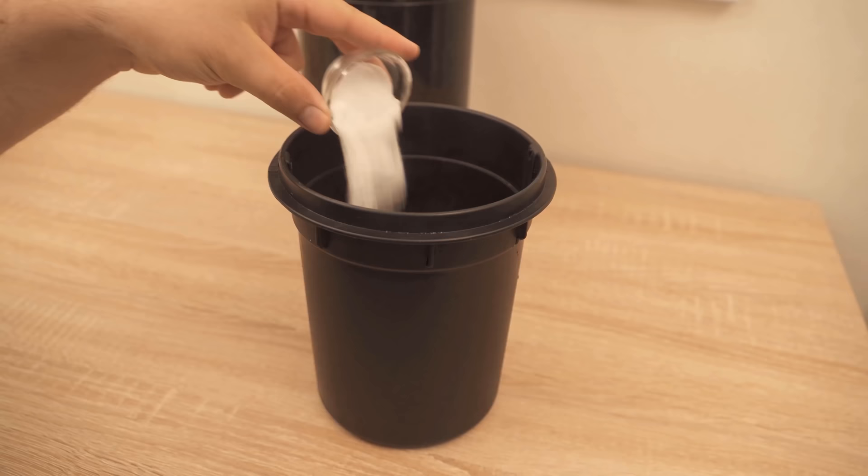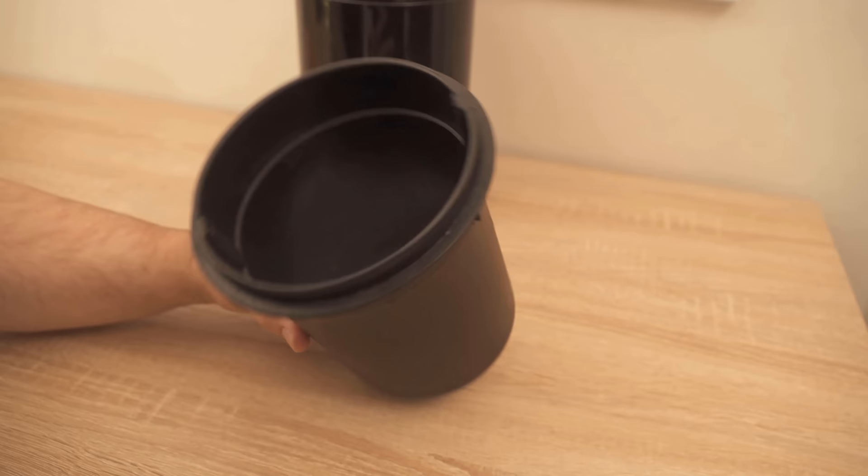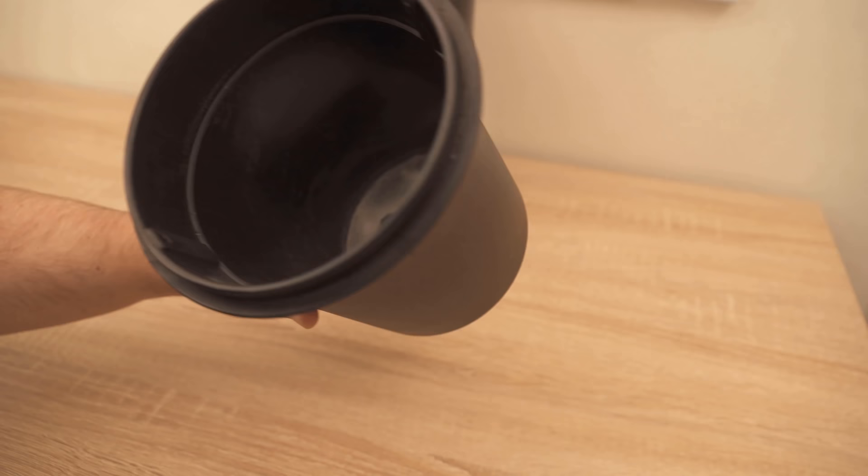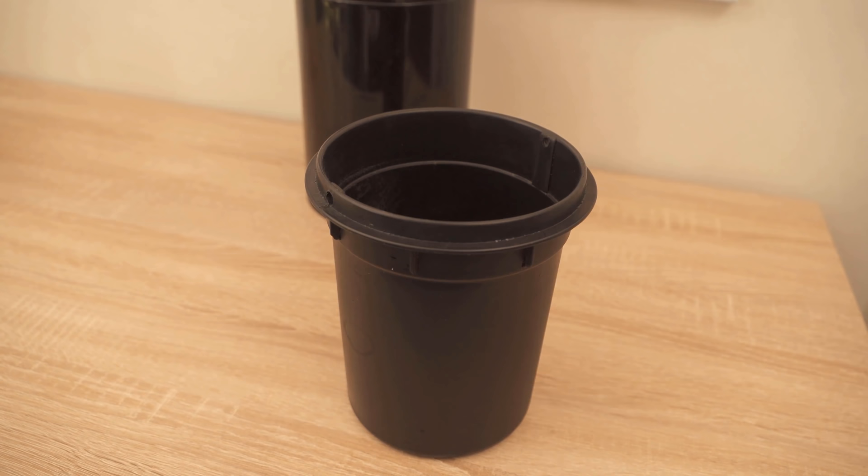Baking soda binds odors and therefore you can use it perfectly in your trash can. I have one to two tablespoons of baking soda in this little bowl here now. Depending on the size of your trash can, you can adjust the amount a little bit.